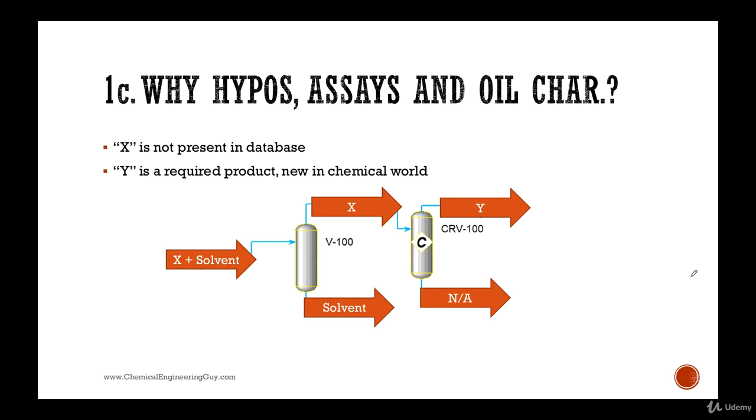Let's say we're working in a pharma industry or pharma company and we're going to convert X into Y. You're modeling X and you see that it's not present in the Aspen Hysis database.